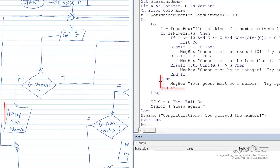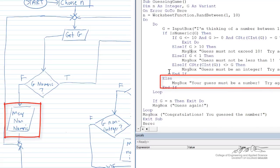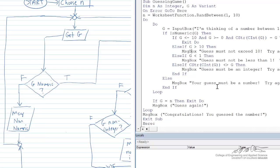Otherwise, we have an else statement for if that is numeric is false. We say your guess must be a number. So that's letting them know that they have to enter a number. And then we move along just as we did previously.